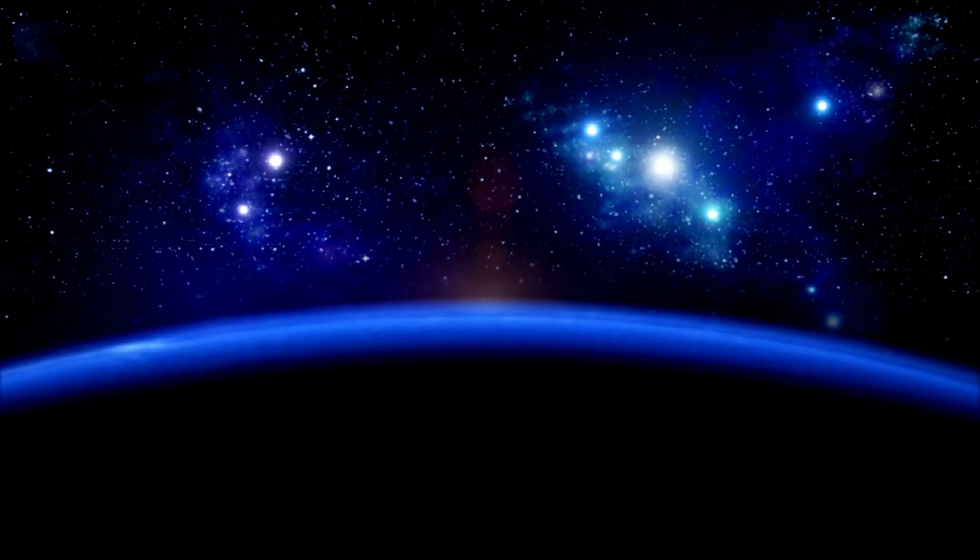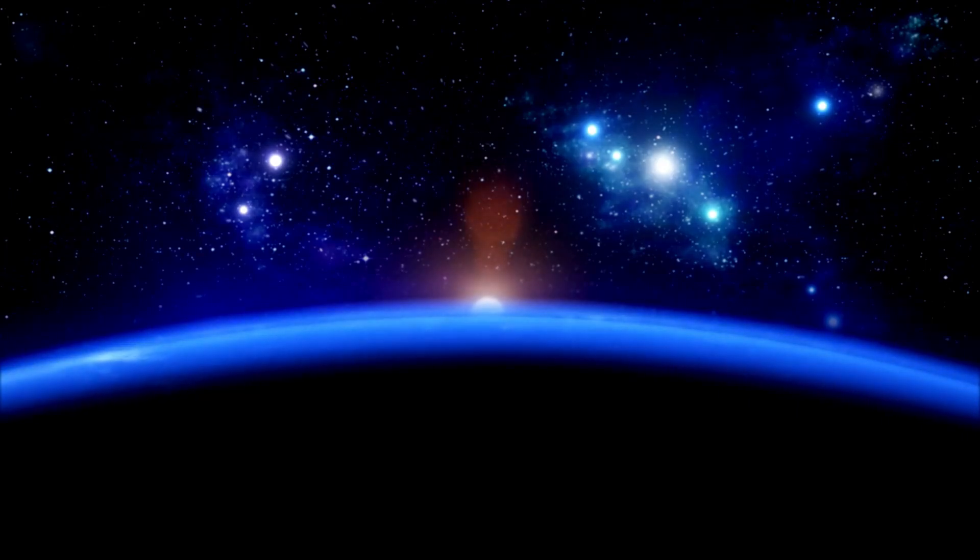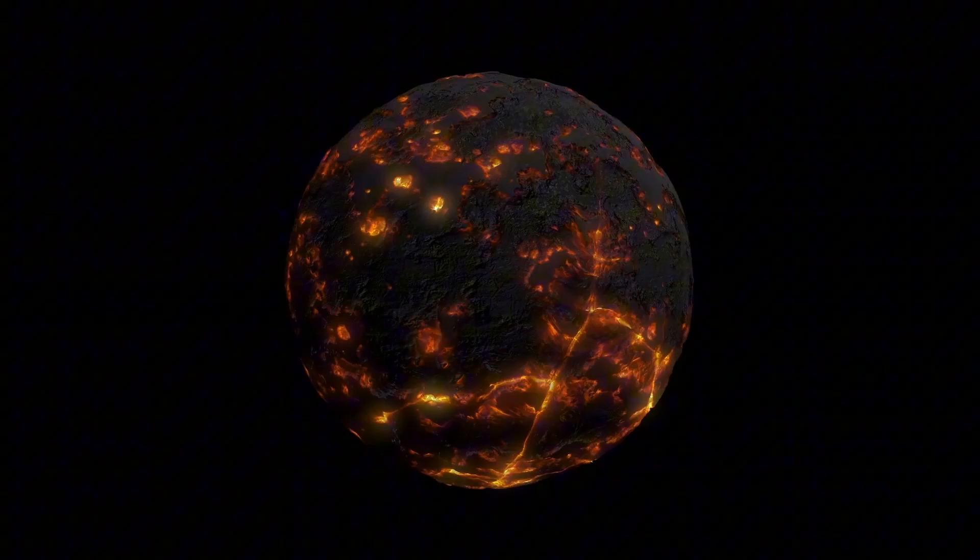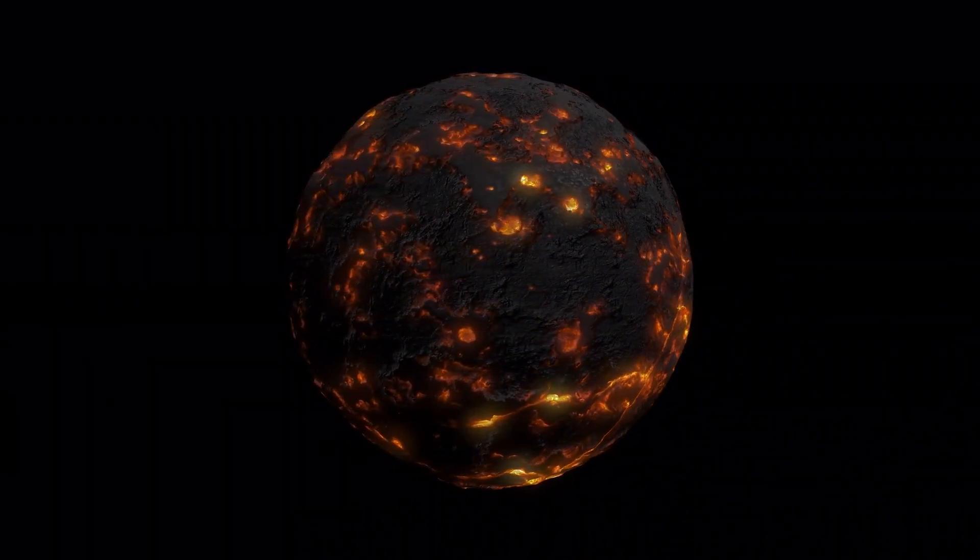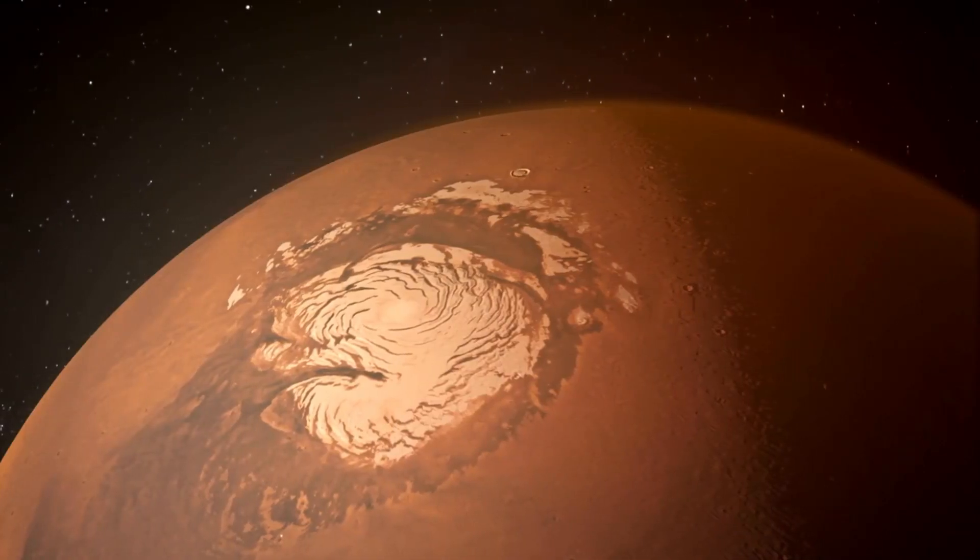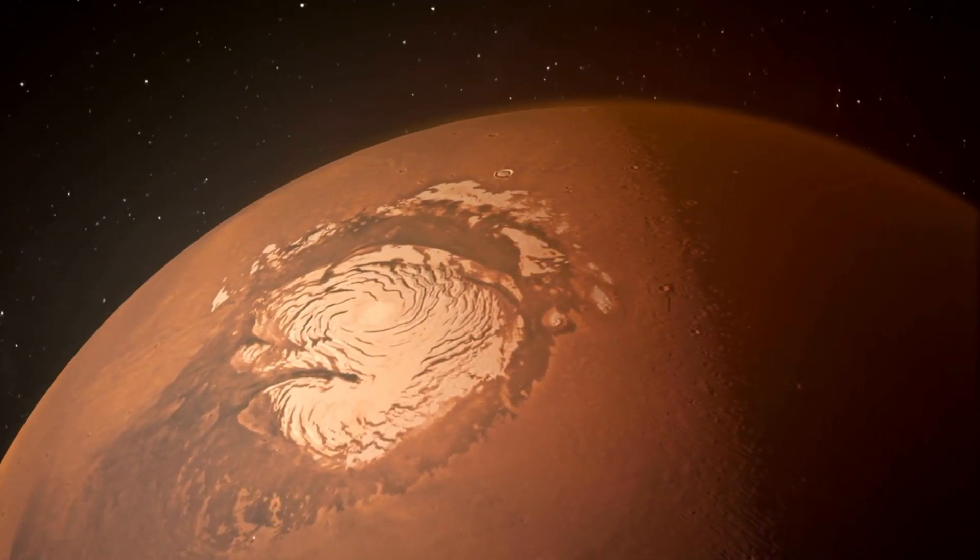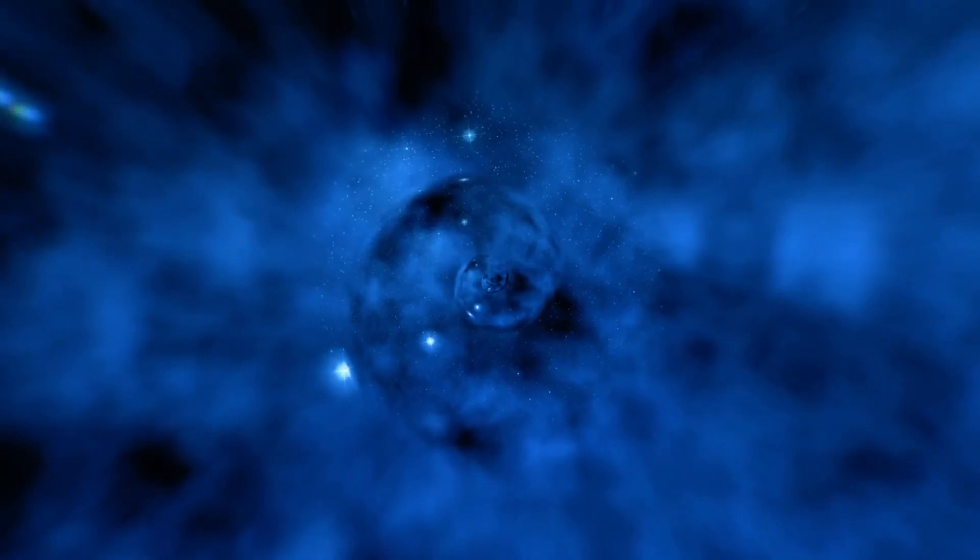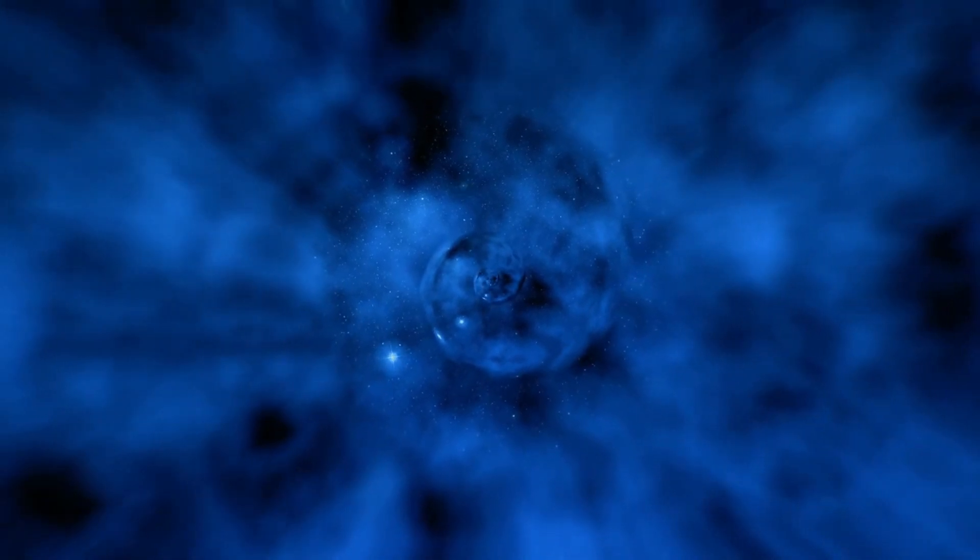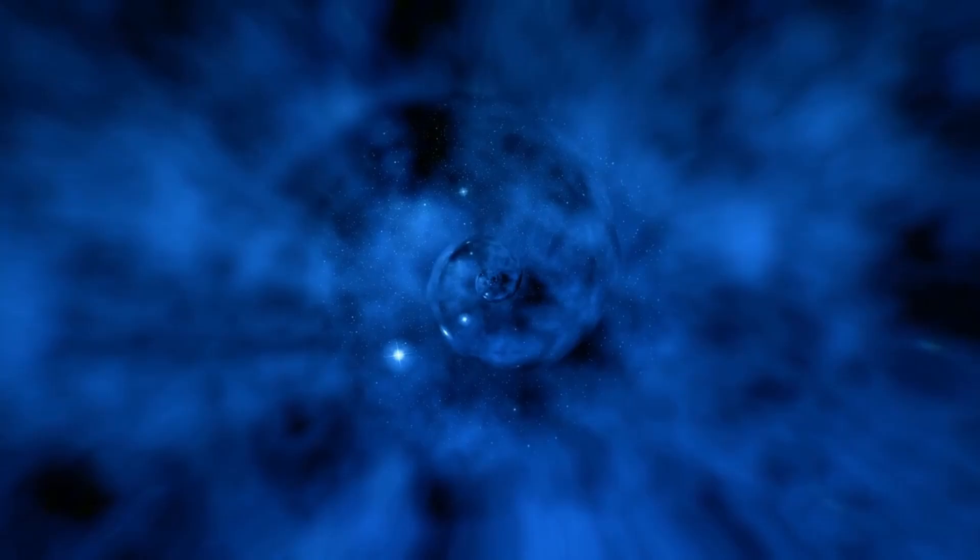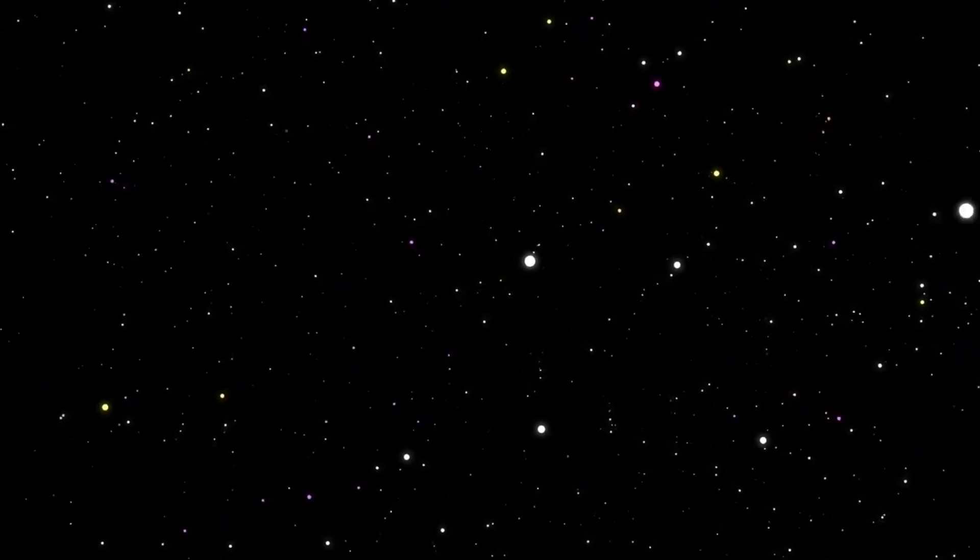In contrast, CMEs are huge releases of solar wind and magnetic fields from the solar corona. They can be considered giant bubbles of gas and magnetic fields being ejected into space. When a coronal mass ejection occurs, it sends billions of tons of solar particles into space at incredibly high speeds. While solar flares and CMEs are linked, they are not the same. A solar flare can occur independently, but sometimes an extremely strong solar flare can be accompanied by a CME, though a solar flare doesn't necessarily cause a CME.